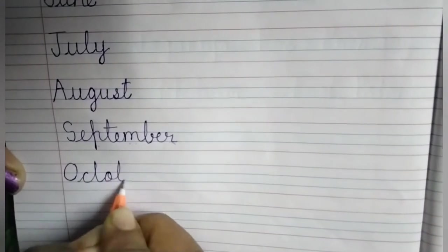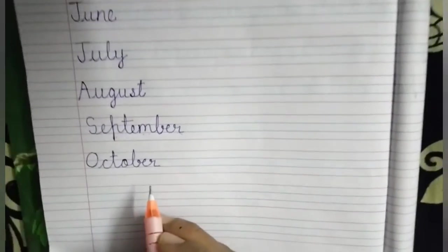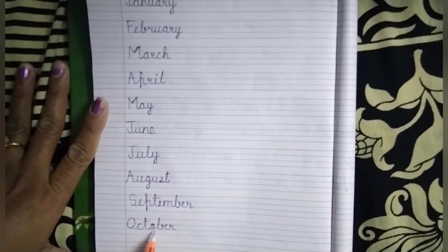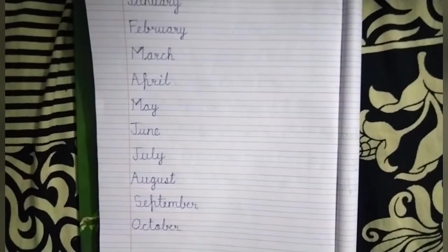And our next month of the year is October. And October is our tenth month of the year. The spelling of October is O-C-T-O-B-E-R, October.